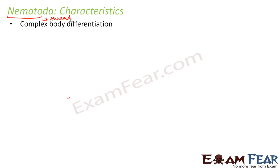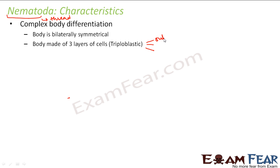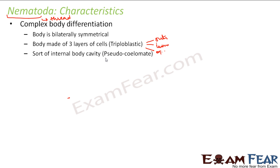They have got complex body differentiation — even more complex when compared to the platyhelminths. Their body is also bilaterally symmetrical, and from platyhelminths onwards, all organisms will have bilaterally symmetrical bodies. The body is made up of three layers of cells, that is triploblastic. These three layers are used to make the outer lining, the inner lining, and some of the organ systems. They have a sort of internal body cavity and that is why they are called pseudocoelomate.